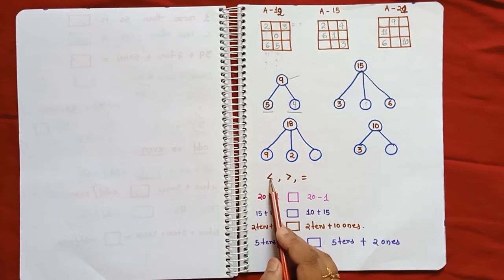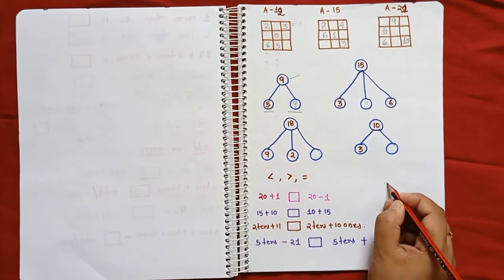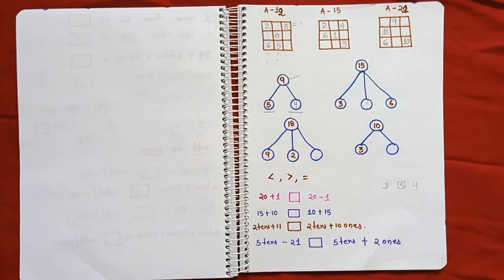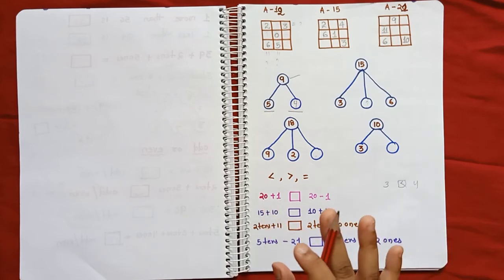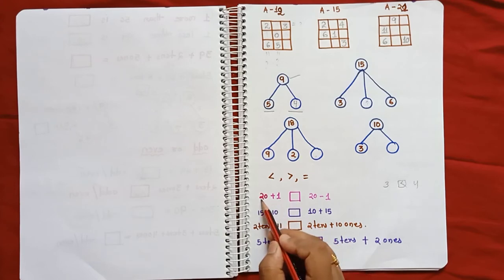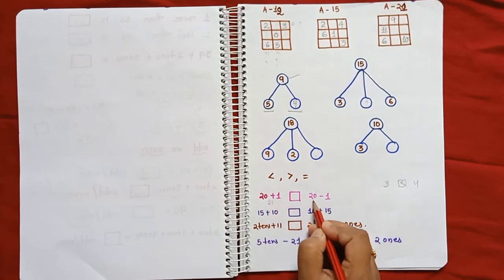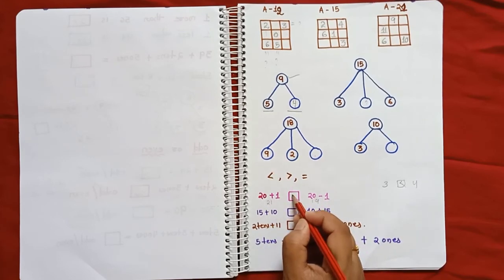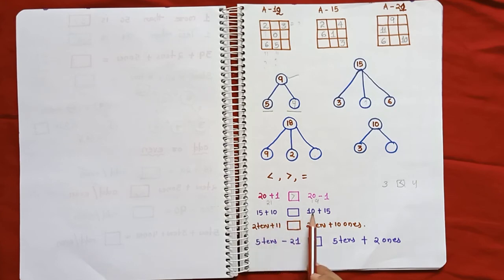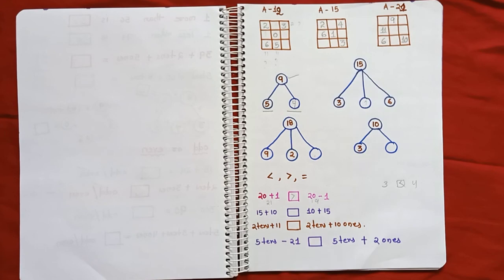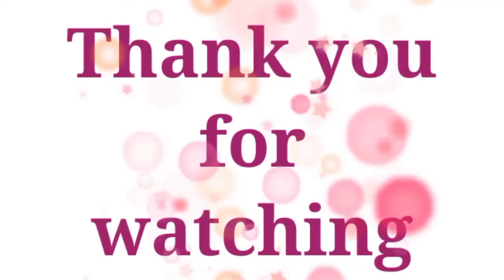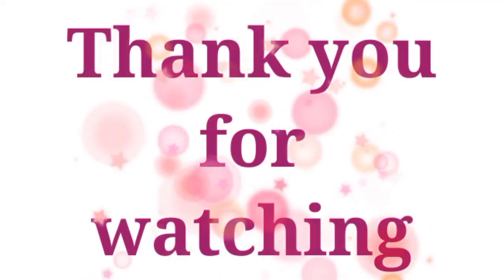This is the last question: put the correct symbols. Normally it is simple — like 3 and 4 — but here I have made it a little different and difficult. For example, 20 plus 1 equals 21, and 20 minus 1 equals 19 — which symbol will be used between these two? Then 15 plus 10. The same question has answers but given in different ways. This is a brain-boosting exercise for children involving addition and subtraction with symbol placement.